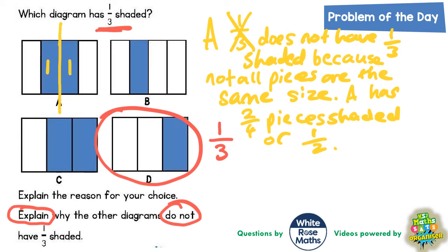So that is a complete answer for A. B is very easy to explain. B has four pieces which are the same size, so that's okay, but only one of them is shaded. So B has one out of four pieces shaded, and the question is talking about one third, so B actually has a quarter shaded.